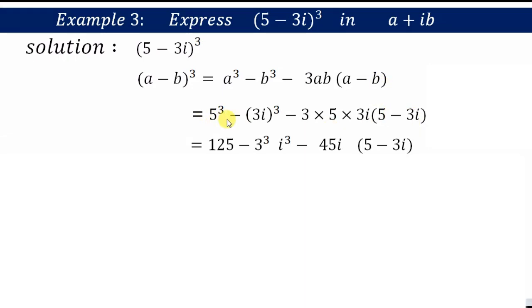So now 5³ is 125 minus 3³ and i³, minus 3×5×3 is 45i, minus 3i. Next, 125 minus 3³ is 27i³, minus 45×5 is 225i. So minus minus will be plus, and 45×3 is 135, and i×i will be i².